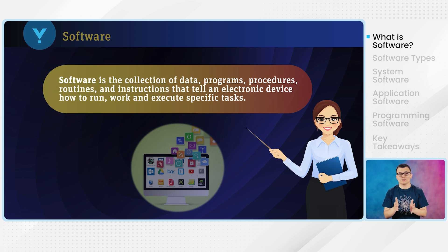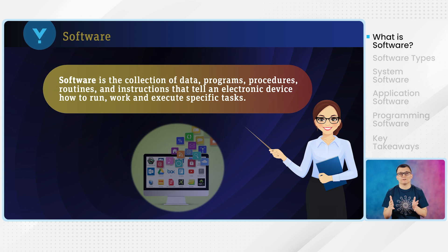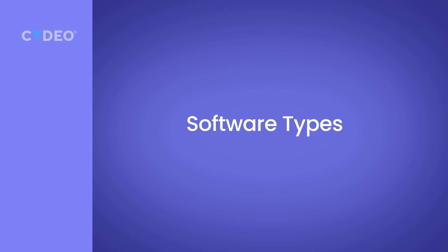Software is written in code that the computer can understand — specifically byte codes, which are in the binary system. The software contains programs that can be translated into byte code so the computer can understand them. Software enables the computer to perform various functions and tasks according to user requirements.